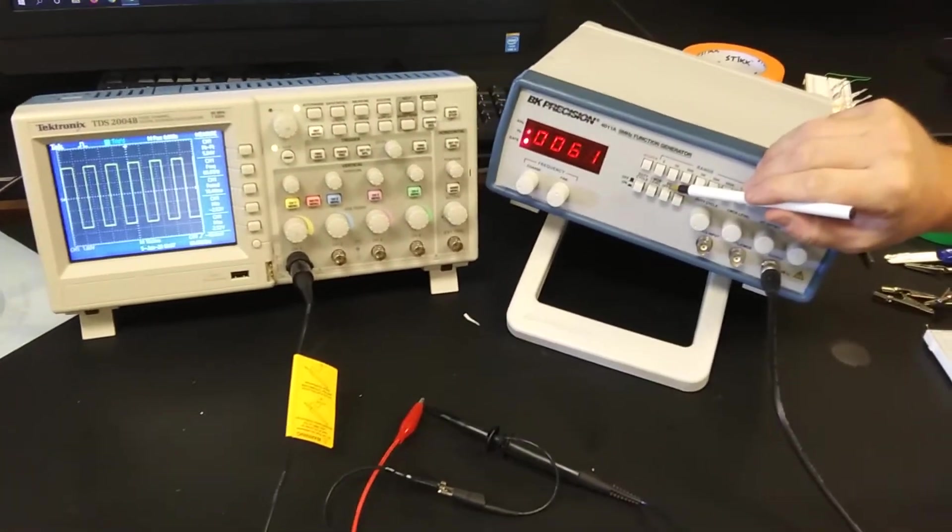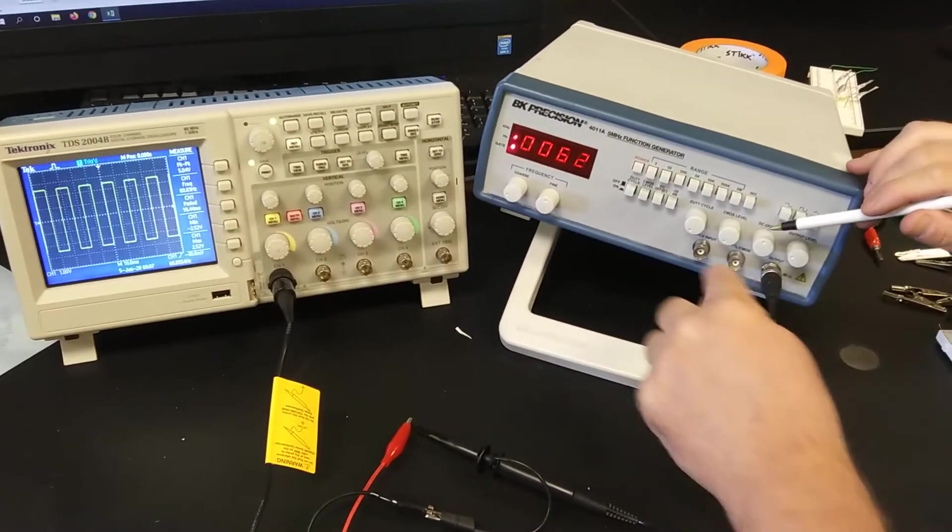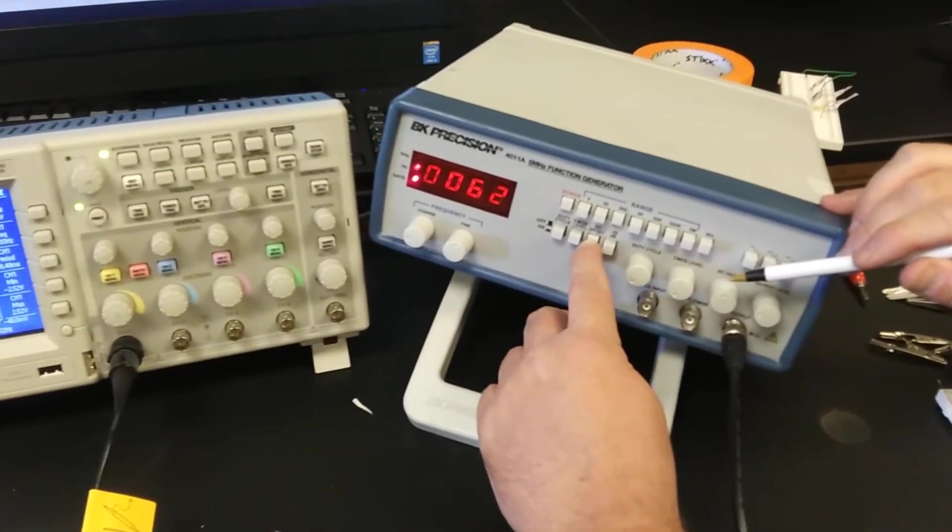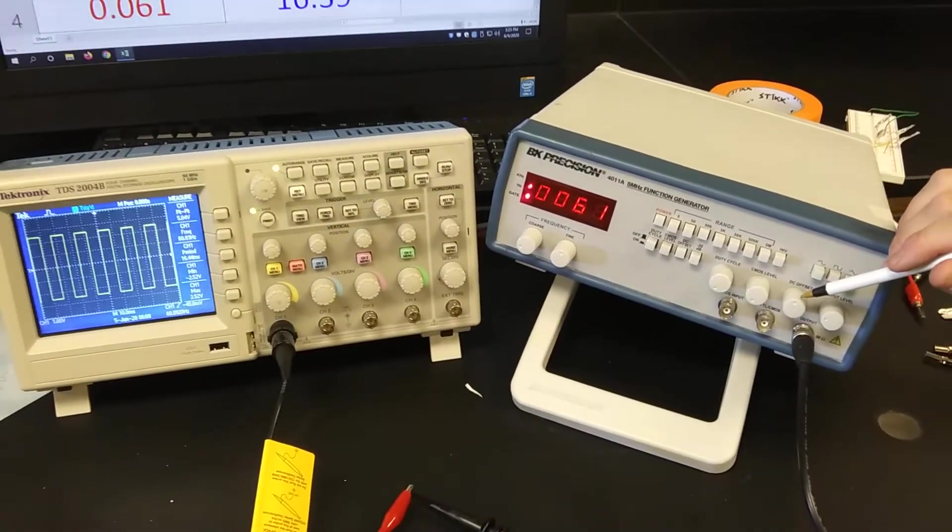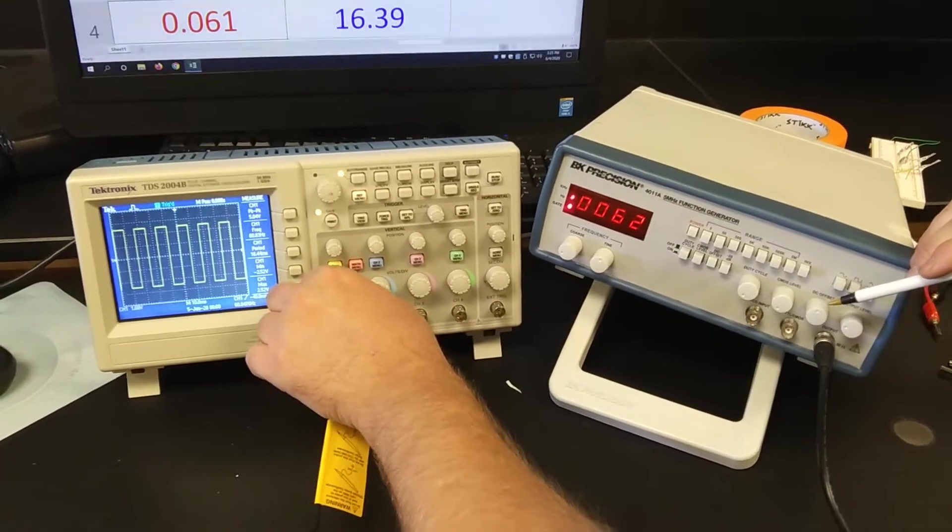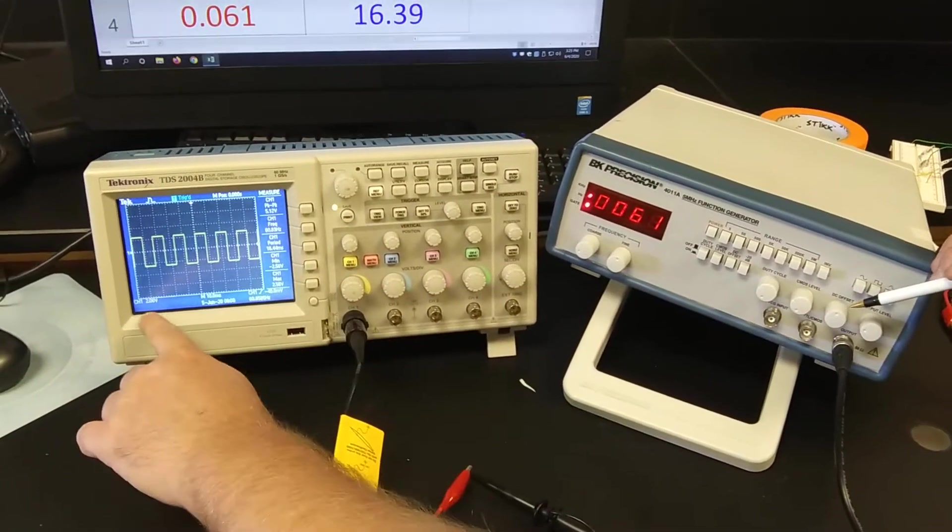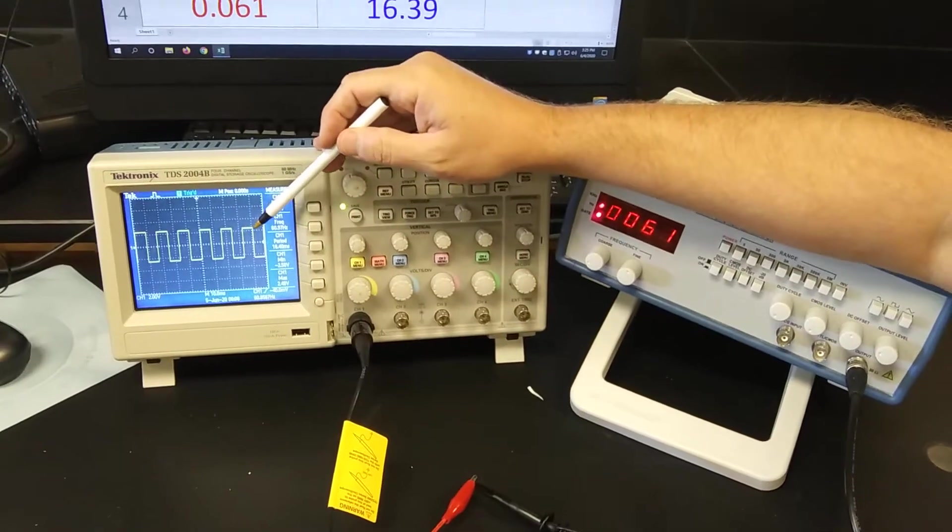This button right here is called DC offset. When I press this right now there shouldn't be any DC offset but this activates this button right here and now I'm going to lower this amplitude a little bit.